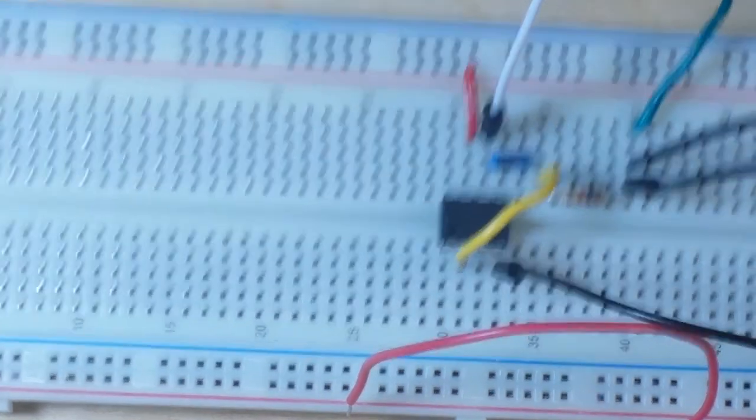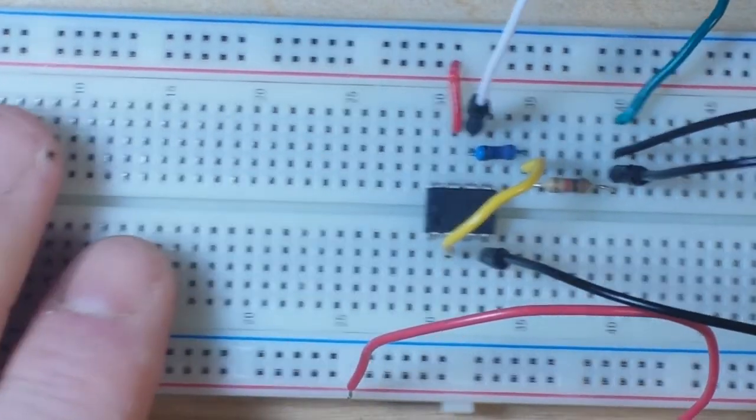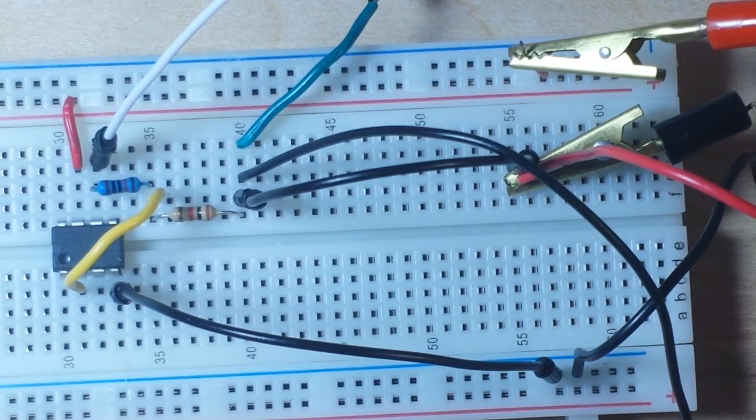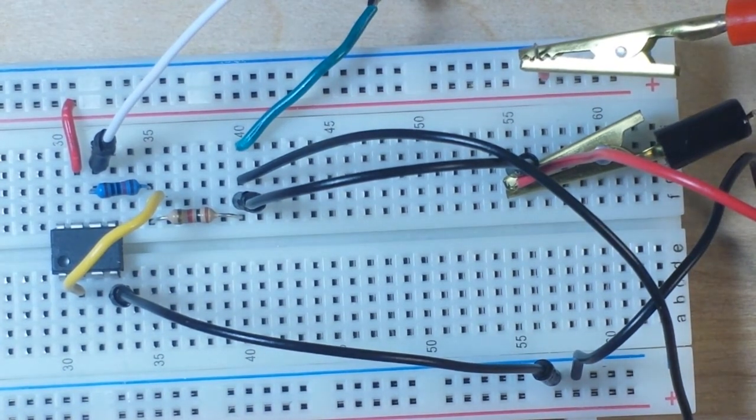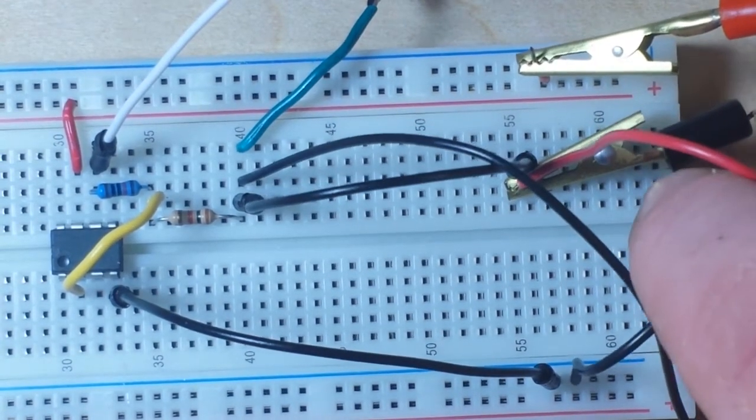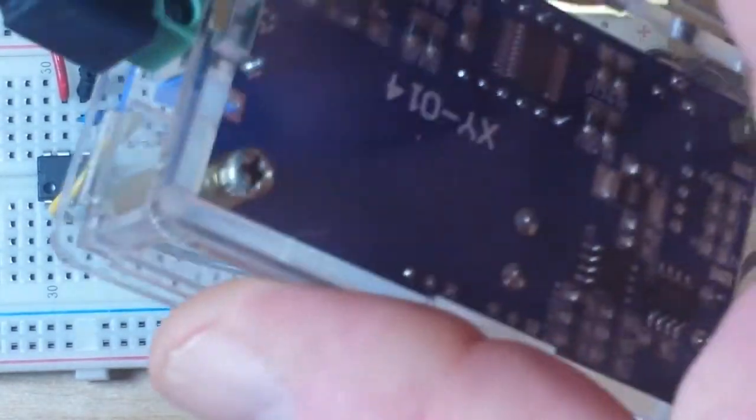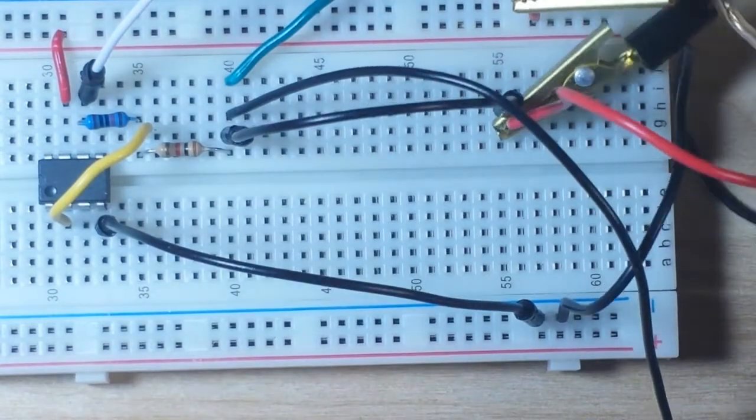Now for the power source. These two alligator clips here are coming from my bench power supply, and these black and white wires here are coming from this little power supply unit you guys have seen me use before.